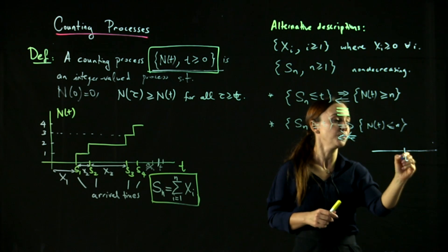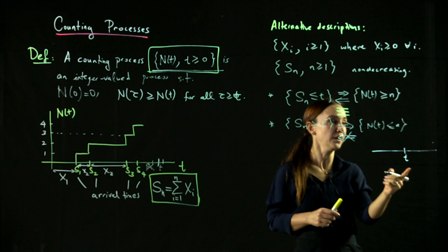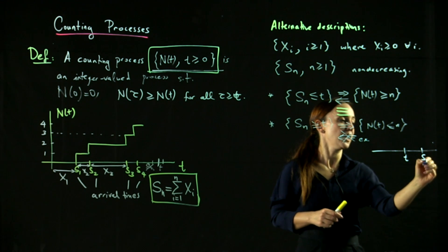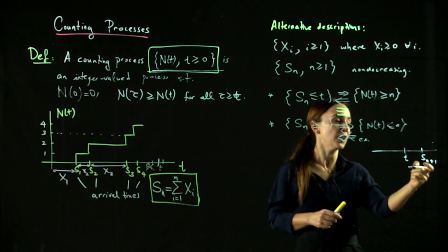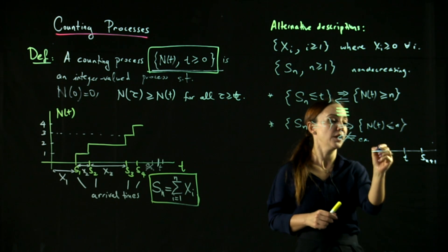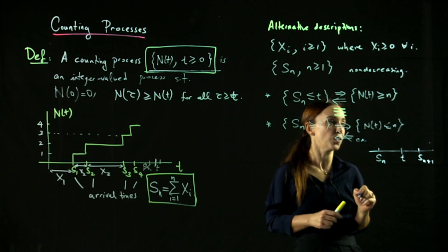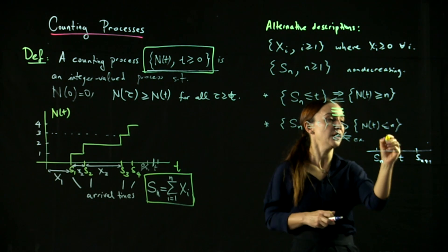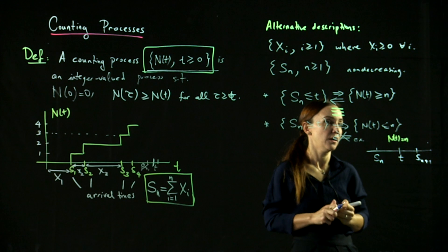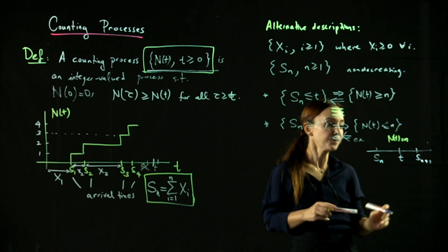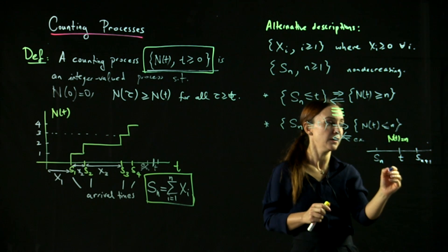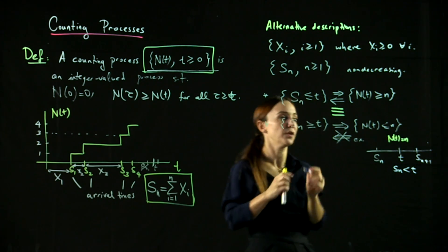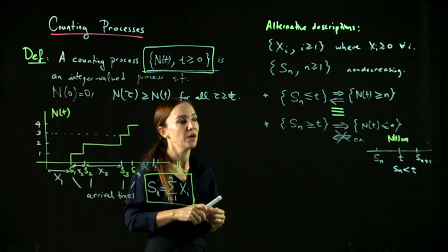Let's see a picture for this example. Consider a time t on the axis. The arrival time s_{n+1} of the (n+1)th arrival is after t, and the nth arrival occurs before t. At time t, N(t) equals n, but s_n is less than t. So the right-hand side does not imply the left-hand side.